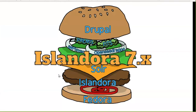Calling Islandora just Drupal and Fedora is a bit misleading, because there's actually a whole lot going on. We have a lot of different services and viewers that we interact with — for example, Solr for searching. These are all large key features beyond just Drupal and Fedora, but when you add it all together, you get a nice repository.